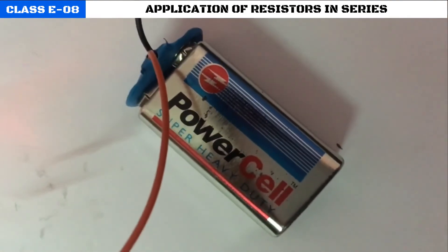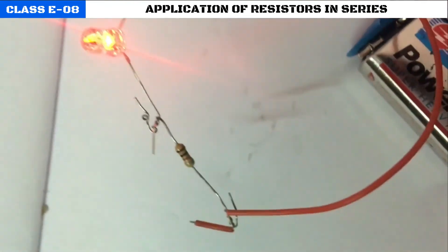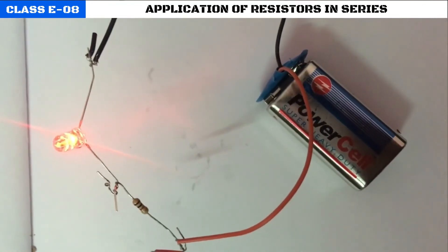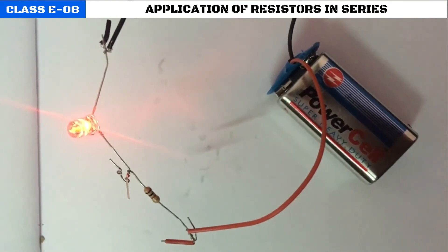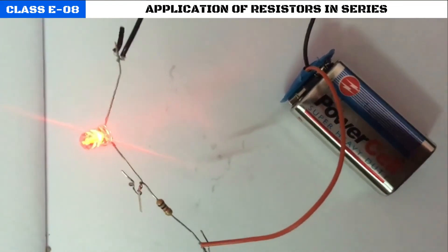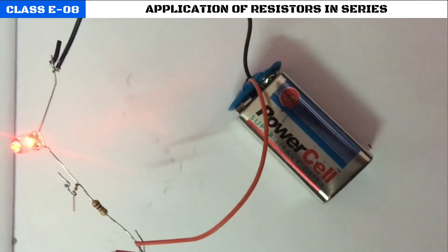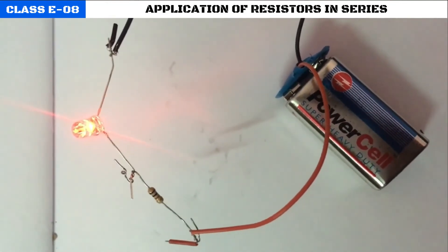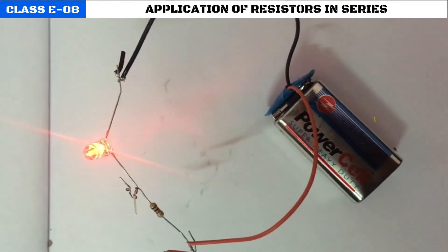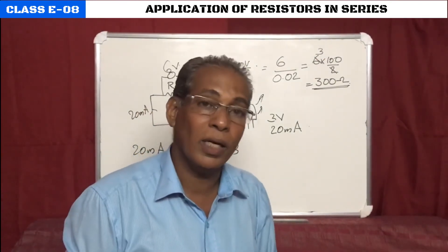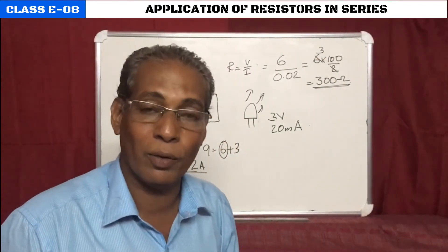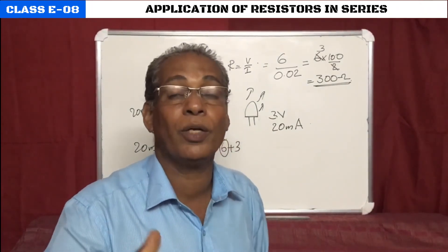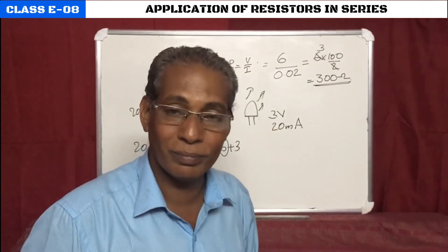This circuit has an LED connected through a 300-ohm resistance in series with a 9-volt battery. The resistance helps split the voltage across the circuit, allowing the LED to glow safely. Without the resistance, the LED would get fused. This is a practical application of resistances in series. We will discuss two or three more such applications in coming videos — think about other situations in daily life where series resistors are used.